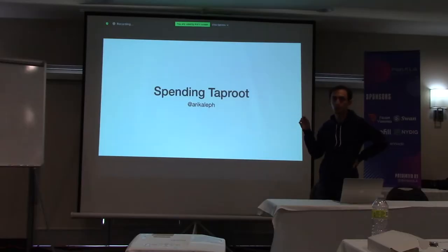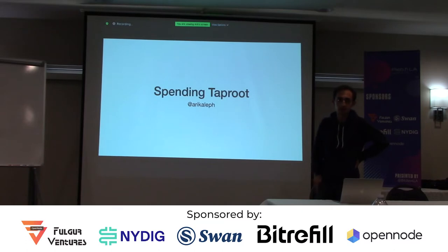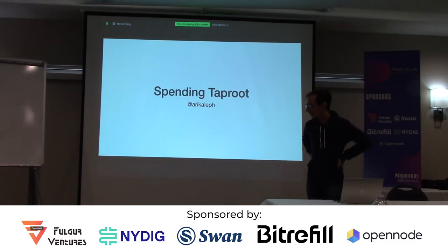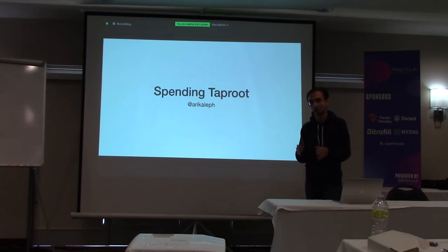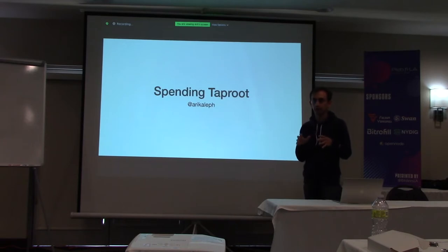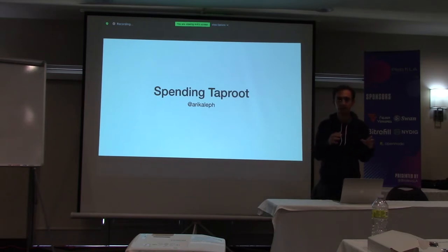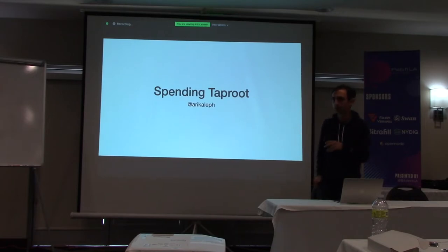I want to talk about how to create taproot transactions with Bitcoin.js.lib for JavaScript users, and also Rust Bitcoin. I didn't want to overlap too much with what Steve has been talking about earlier, but I noticed while building the unit test suite that there is some overlap in what those libraries can do, and also some areas where you have to do things manually in each library.